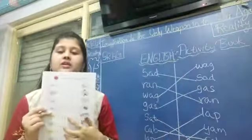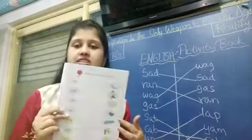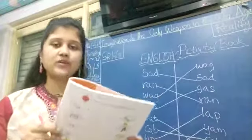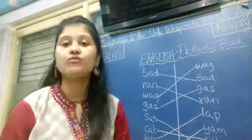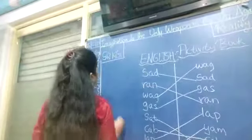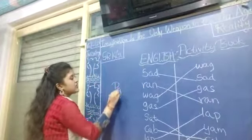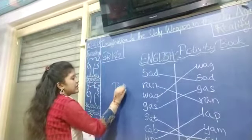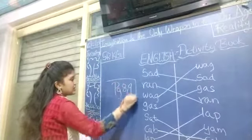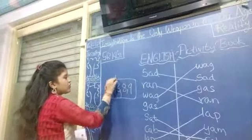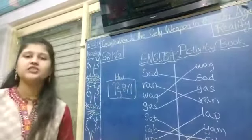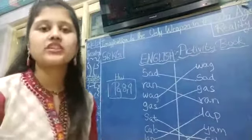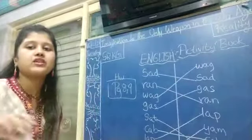You have to match them with their pictures. So page number 8 and page number 9 is your homework for today in your English activity book. Page number 8 and page number 9 is your homework for today in your English activity book. Okay children, so we will meet next time. Bye everyone.